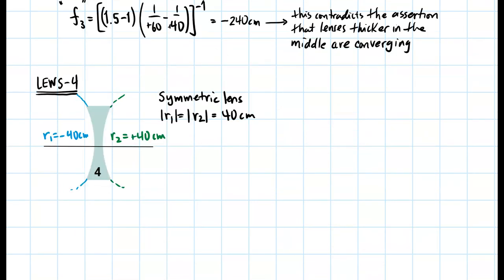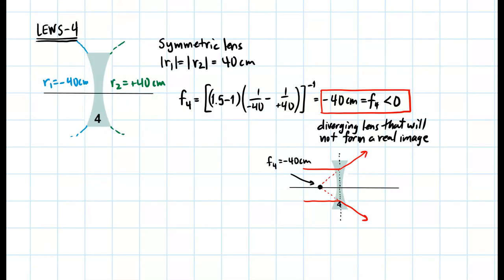For lens 4, this lens is symmetric, so r1 and r2 both have magnitude 40 centimeters. Since it is thinner in the middle, we expect a diverging lens. The first surface r1 has its radius landing to the left, so it is negative 40 centimeters. R2 has its radius landing to the right, so it is positive 40 centimeters. Plugging into the lens maker equation gives focal length four equal to negative 40 centimeters, which is less than zero — it is a diverging lens that will never form a real image.